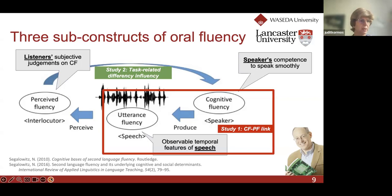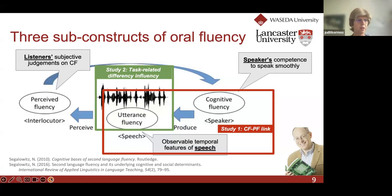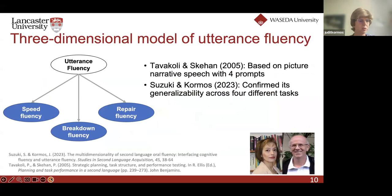The second study we'll present examines task-related differences in fluency. There has been a lot of research in this area — many studies have looked at how task characteristics influence complexity, accuracy, and fluency, the traditional CAF measures. But a lot of these studies didn't use fine-grained measures; they mostly used speech rate, and they manipulated cognitive complexity differently from what we did. Our study also included an integrated task and a multimodal task, while most previously investigated task types were quite limited in nature.